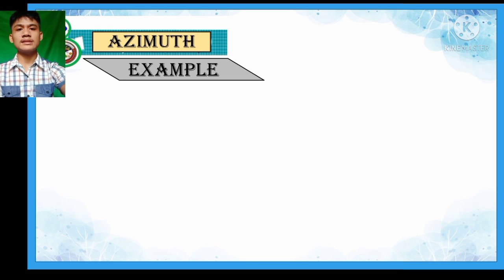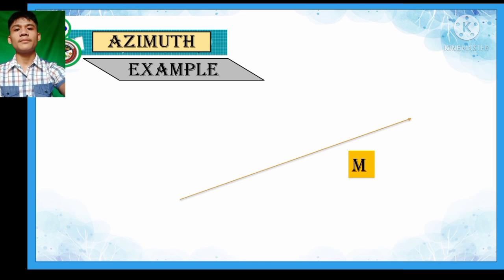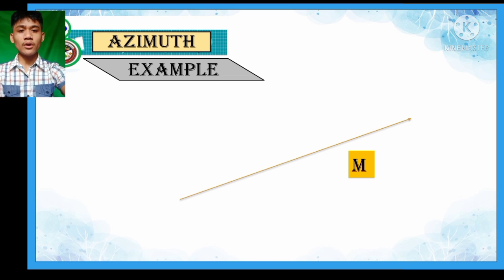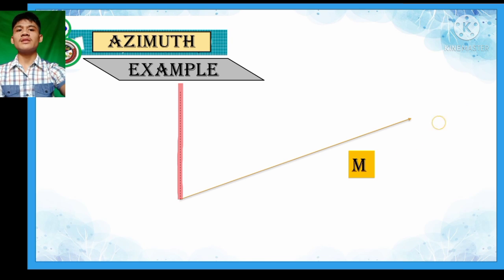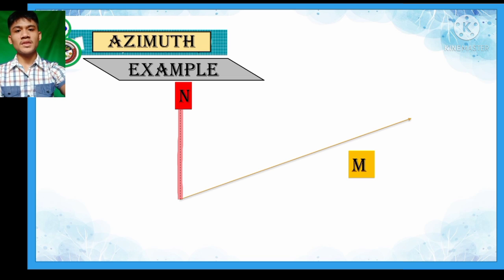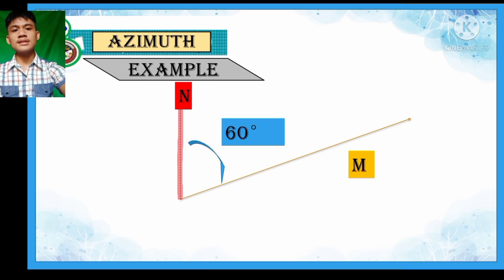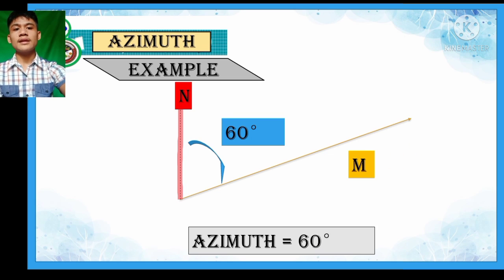How about if only a line is given, denoted as line M or point M at the edge of the line? First step — we should always assume that the north direction is given. We draw the north direction and then measure the angle formed between the north reference and the given line. Assume that it is 60 degrees. Then the azimuth value of this line is 60 degrees.